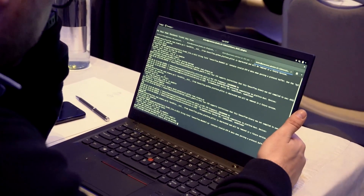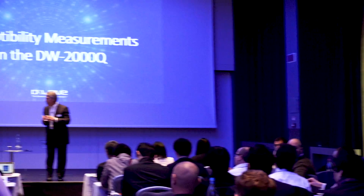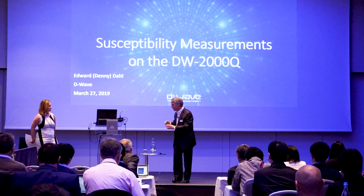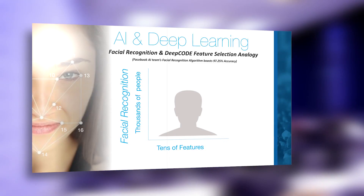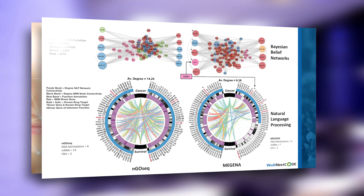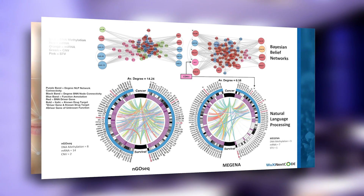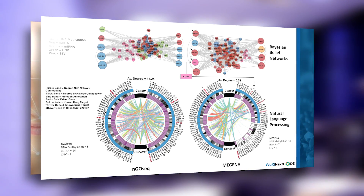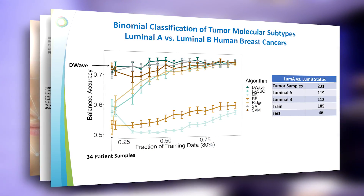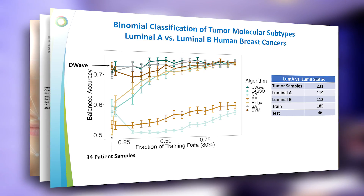We assessed a number of quantum computing platforms and we found that D-Wave is much more accurate in classification of these real or actual human tumor cancer types than the simulated IBM platform that we were using.